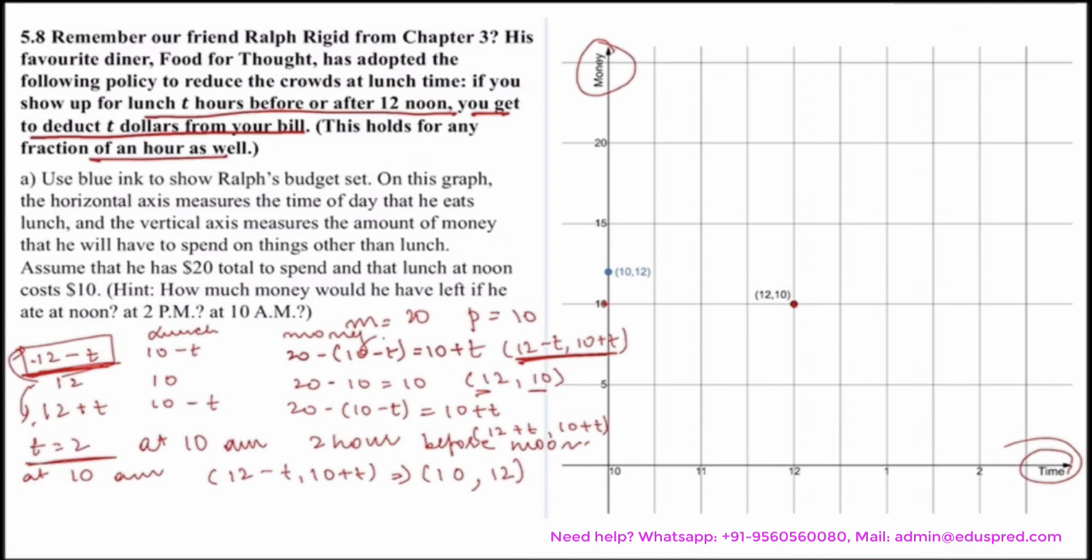Now what happens at 2 PM? So at 2 PM, Ralph is having lunch 2 hours after noon. So now you are operating in this scenario. So that means your t is now 2, as 2 hours after noon is 2 PM. At this scenario, your bundle is (12 plus t, 10 plus t).